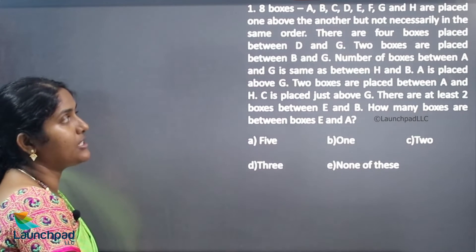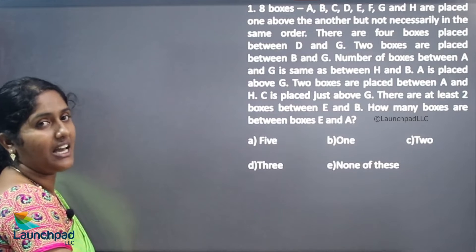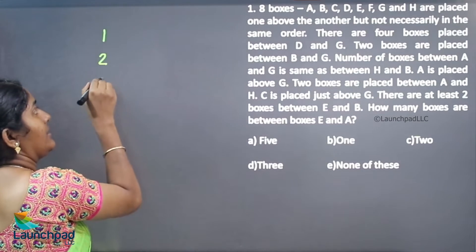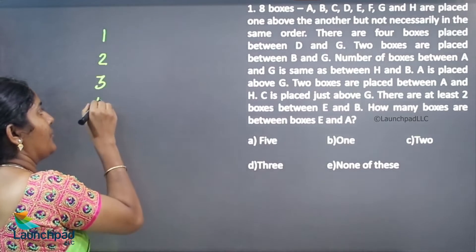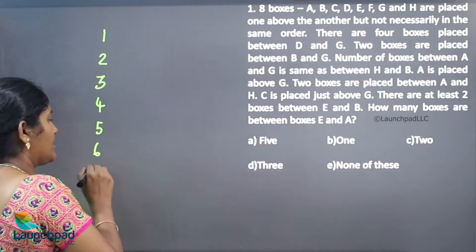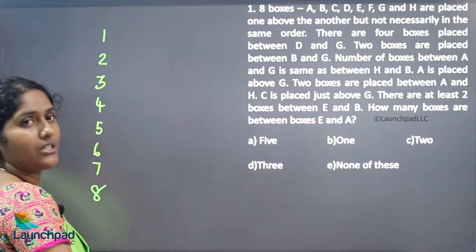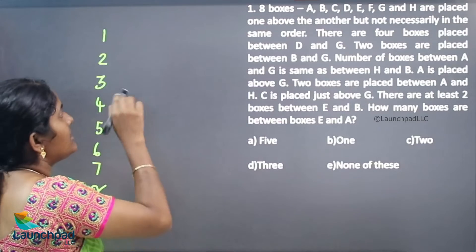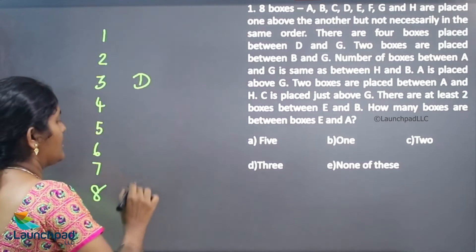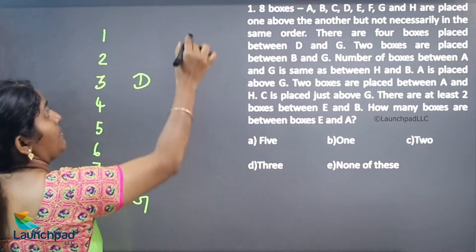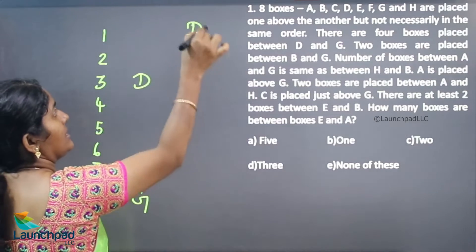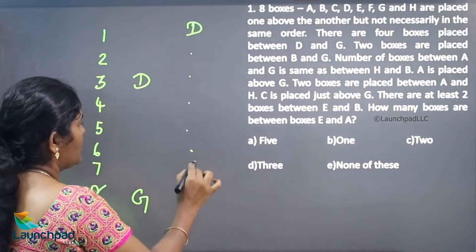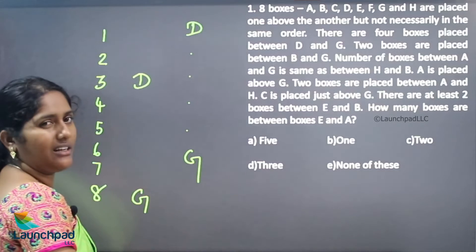There are 4 boxes placed between D and G. So we can consider positions 1st through 8th. If I am placing D here, G will be placed 4 positions away — so G will be here.